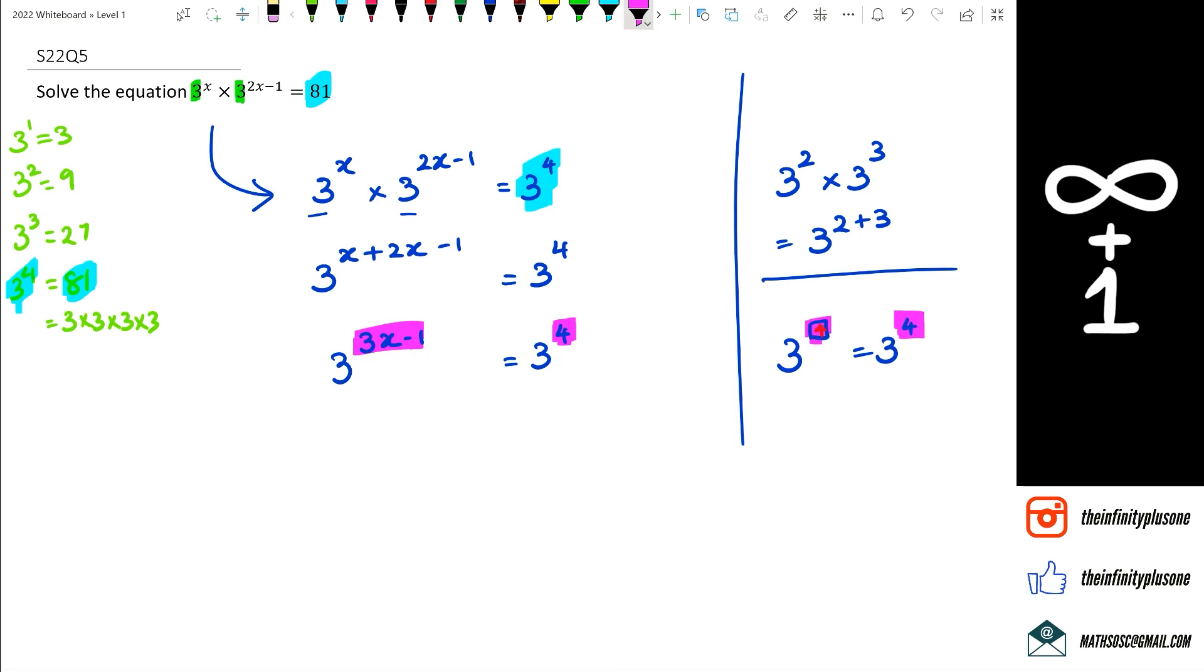What we're trying to say is that the two powers are equal to each other because the bases are the same. Because of that, we can forget about the bases and just write it as 3x minus 1 is equal to 4.